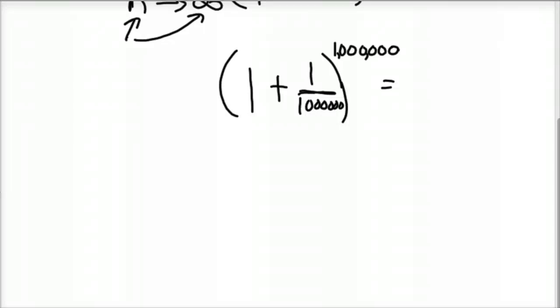So 1 plus 1 divided by 1 million to the 1 millionth power. Now, get your calculator out and see if you can come up with that. See if you can plug that in. So when you plug that in, I'm going to pause for just a second. I plugged it into a pretty cheap $10 calculator. And this is the approximation I got. So again, this is an approximation.